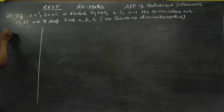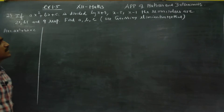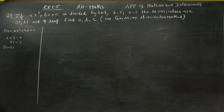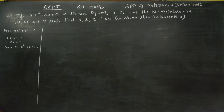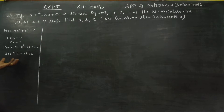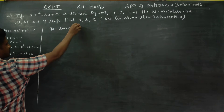We are going to use the remainder theorem. For x+3=0, x is equal to -3. The polynomial is p(x) = ax² + bx + c. Substituting x=-3: p(-3) = a(-3)² + b(-3) + c. Since p(-3) is the remainder and the first remainder is 21, we get the first equation: 9a - 3b + c = 21.